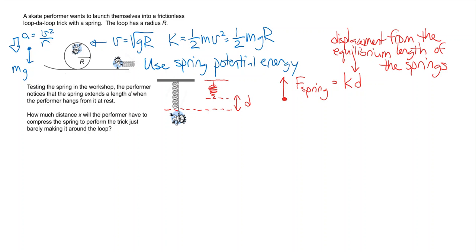We say that it's negative, but what we mean is that whatever way the displacement is, in this case down, the restoring force of the spring is in the opposite direction, which means in this case up. The performer has a gravitational force on them equal to mg.